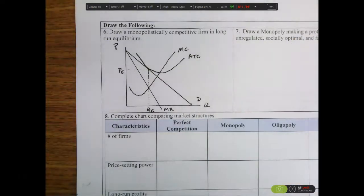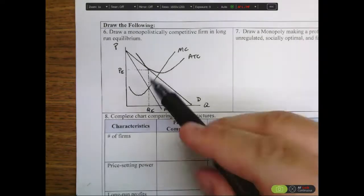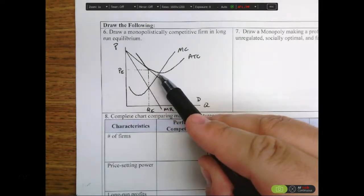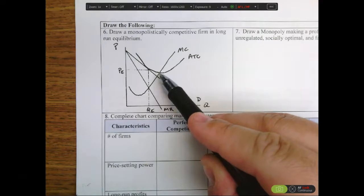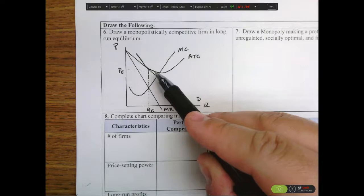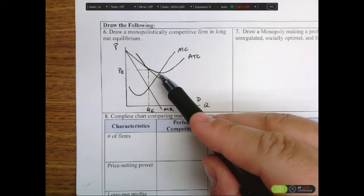A couple of other things that you might notice on this graph that don't become immediately clear is that you have excess capacity. We can produce more and lower our average total costs, but we choose not to because in order to do that, we'd have to lower our price, and it would create a loss for the firm. So we have the ability to produce more at a lower average total cost, but we choose not to, and we call that excess capacity.